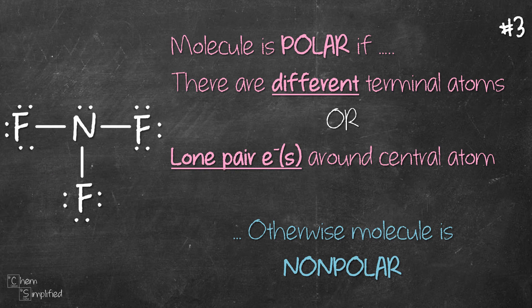Moving on to our final example, NF3. As usual, our first question, are there different terminal atoms in this molecule? Nope. They are all fluorine. What about lone pairs surrounding the central atom? The central atom in this case is nitrogen. Yup. There is actually one lone pair on nitrogen. Since this statement is true, therefore, NF3 is a polar molecule.